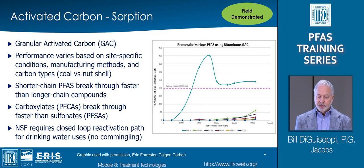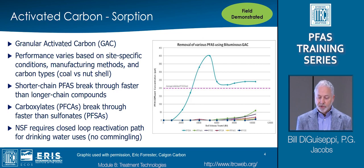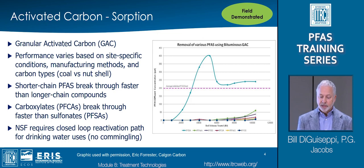As the graph shows, short chain compounds break through sooner than longer chain compounds, where PFBA, perfluorobutanoic acid, breaks through way earlier than other PFAS. Carboxylates, such as PFBA or PFHXA, tend to break through faster than sulfonates, such as PFOS or PFHXS. Questions have been raised about the use of reactivated carbon for drinking water, but reactivation has been demonstrated to fully remove PFAS from the carbon. Additionally, for drinking water applications, the National Sanitation Foundation requires reactivated carbon to be returned to your site, rather than commingling carbon from multiple sites.